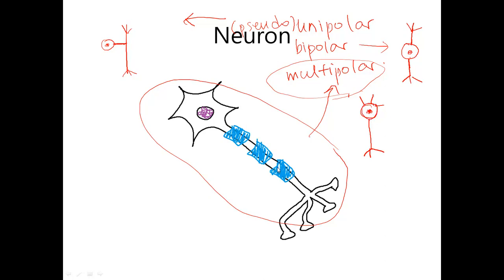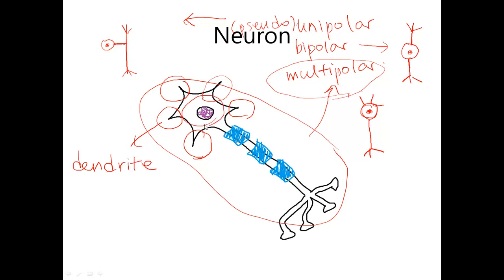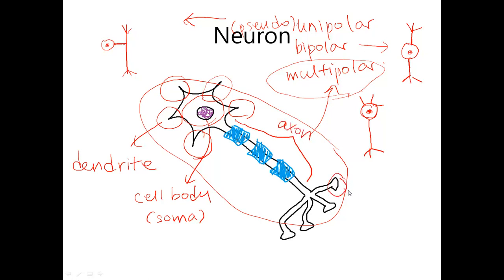Looking at the multipolar neuron, these short protrusions that form out of the cell body are called dendrite. And this is the cell body, which is also known as soma. And this is the axon, and this is the axon terminal, because it is at the end of the axon.